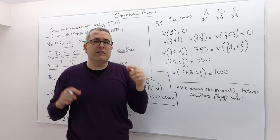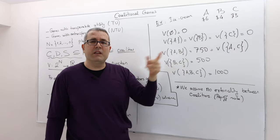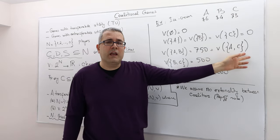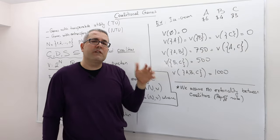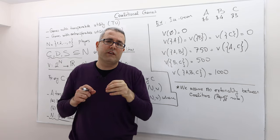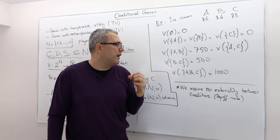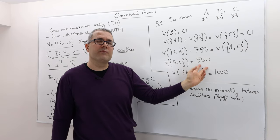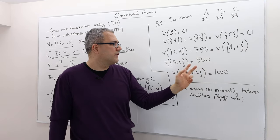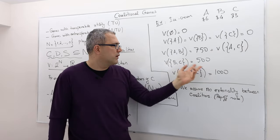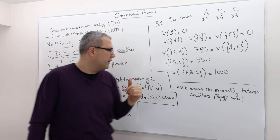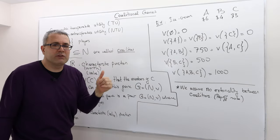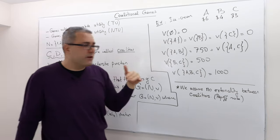However, if A and B pool their resources, remember they can buy the medium size ice cream which means 750 grams. Same for A and C. However, if B and C pool together, their monies were lower than A and so they can only buy the small tub of ice cream, so therefore their worth is 500.